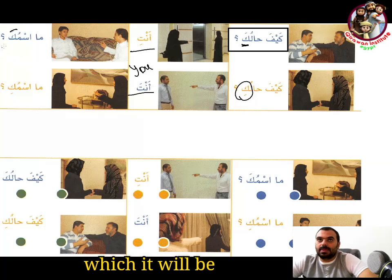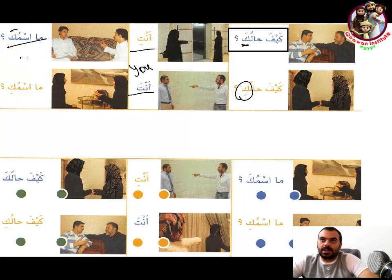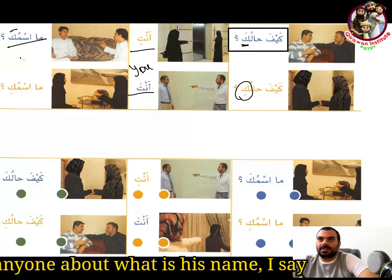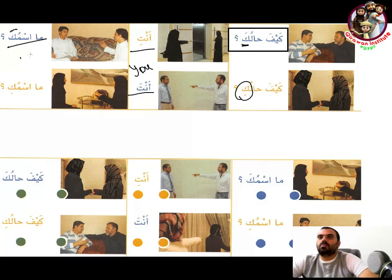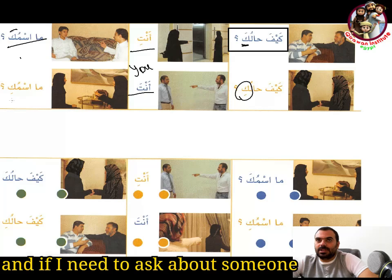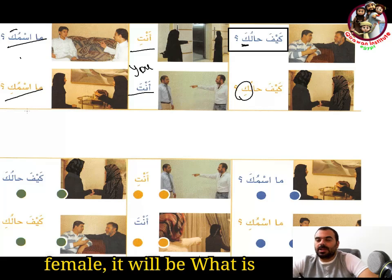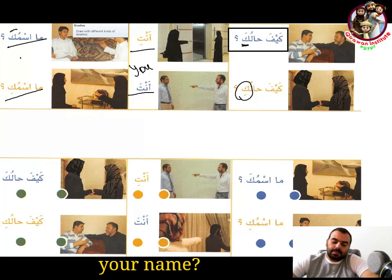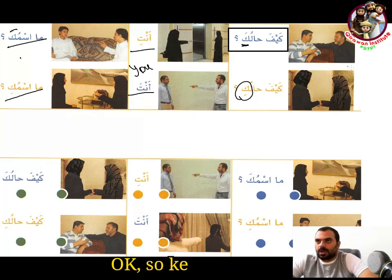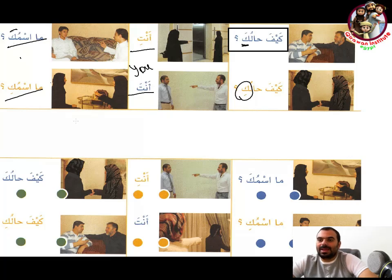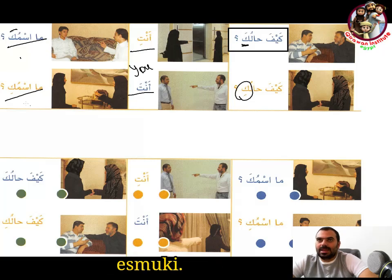'Ma ismuka' is used for male — if I ask anyone what his name is, I say 'ma ismuka.' If I need to ask about a female, it will be 'ma ismuki' — what is your name? So: 'kaifa haluka, anta, ma ismuka' and 'kaifa haluki, anti, ma ismuki.'